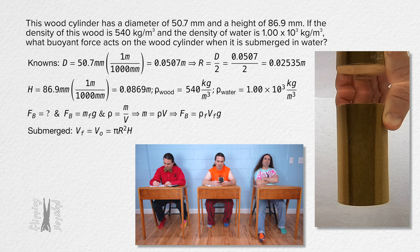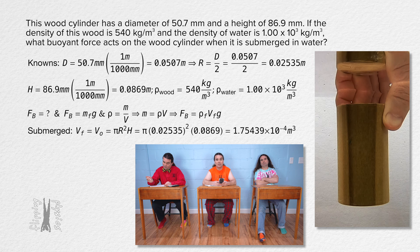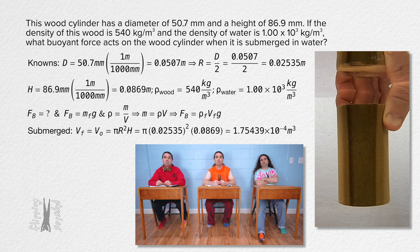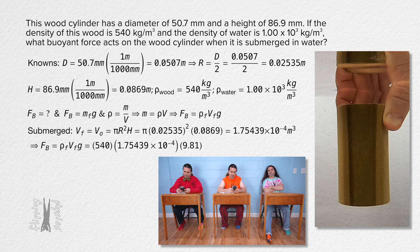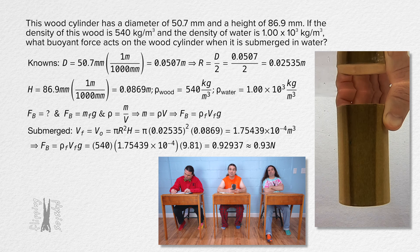We have those numbers. So it's pi times 0.02535 squared times 0.0869, or 1.75439 times 10 to the negative 4 cubic meters. So now we can determine the buoyant force. It equals the density of the fluid times the volume of the fluid times the gravitational field, or 540 times 1.75439 times 10 to the negative 4 times 9.81, or 0.92937, roughly 0.93 Newtons with two sig figs.